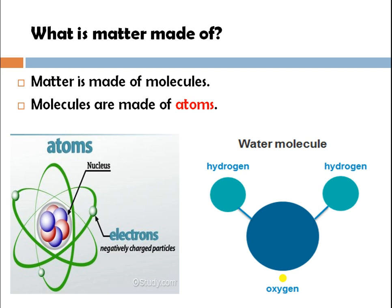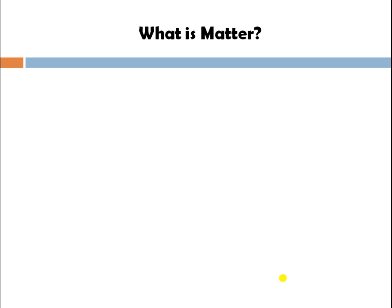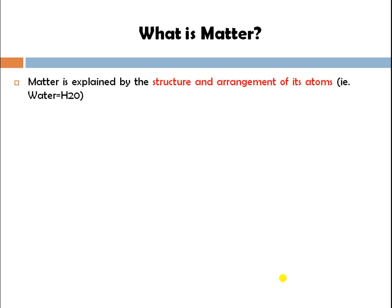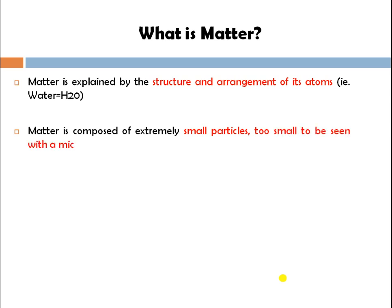Your atom consists of protons, neutrons, and electrons. A molecule consists of a number of atoms. For example, in a water molecule there are three atoms: two hydrogen and one oxygen. Matter is explained by the structure and arrangement of its atoms. Matter is composed of extremely small particles, too small to be seen with a microscope, and these extremely small particles are called atoms.